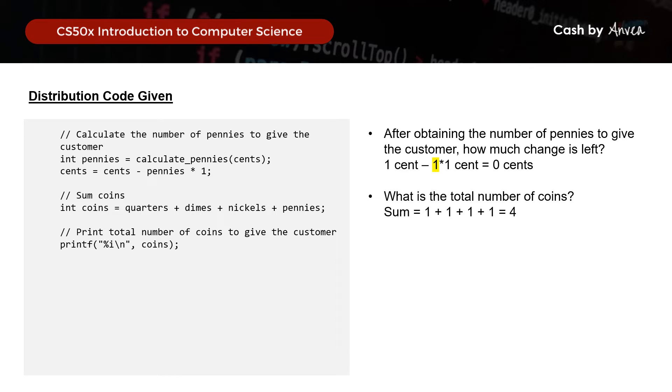In summary, there are 5 functions that we need to code: get_cents, calculate_quarters, calculate_dimes, calculate_nickels, and calculate_pennies. Let's work on the first function, which is get_cents.